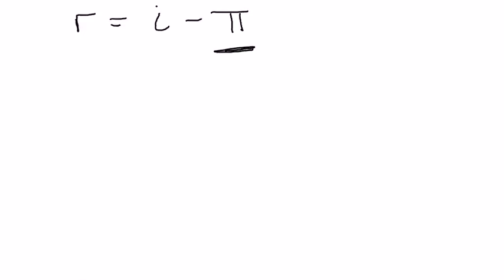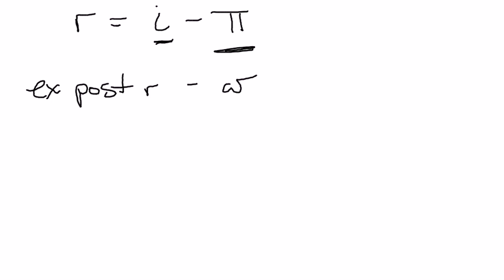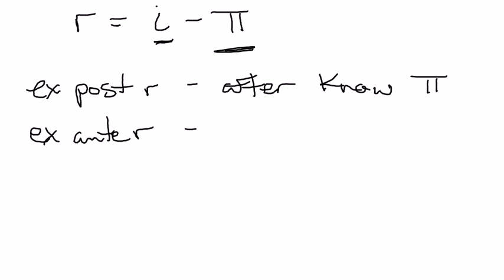Now, if you think about it, suppose you were borrowing money for a year. When you actually borrow the money, the nominal interest rate — the I term — will be stated in the loan contract, so you'll know what the nominal interest rate is. But you actually don't know what the inflation rate is going to be for the next year, which means you don't actually know what your real interest rate or the real cost of borrowing is going to be for the next year. As a result, we're going to make a distinction between two types of real interest rates: the ex-post real interest rate, which is after you know inflation over the life of your loan — in this case one year — and the ex-ante real interest rate, which is before you know the inflation rate for the next year.